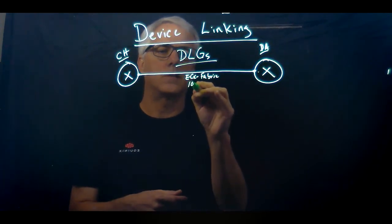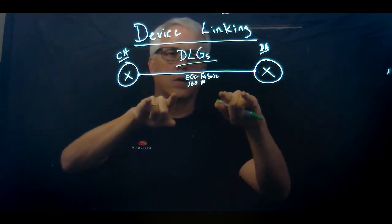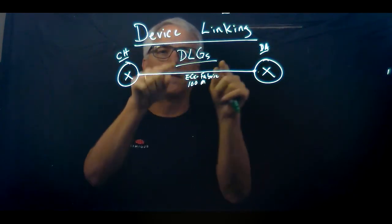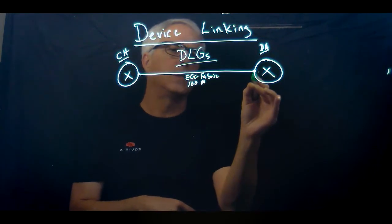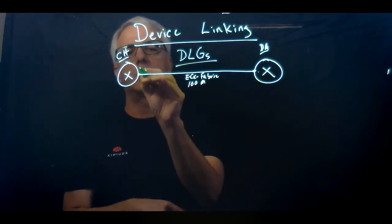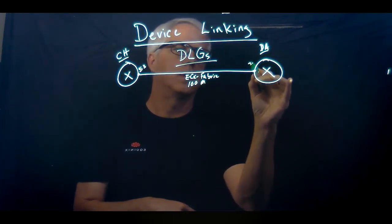Say they wanted 100 meg connection. They would have 100 meg connection connected to Chicago and Dallas all across the ECX fabric configured using a device link group. Again, the device link group is done at the interface level. Say this is gig three, we'll just make it gig three on this side as well.